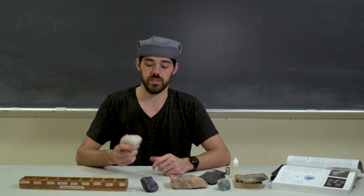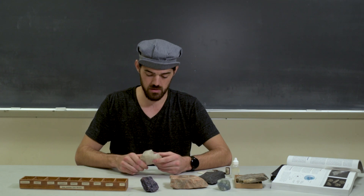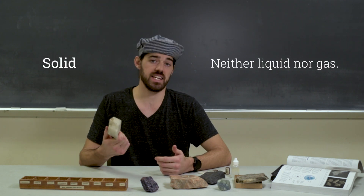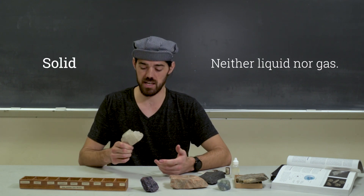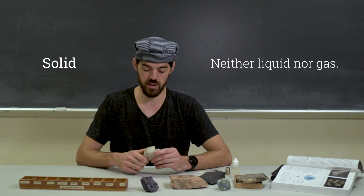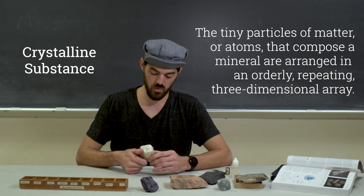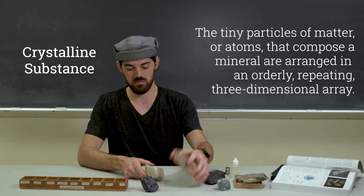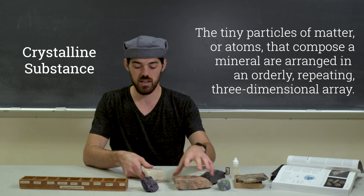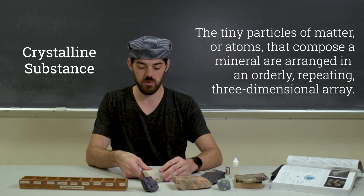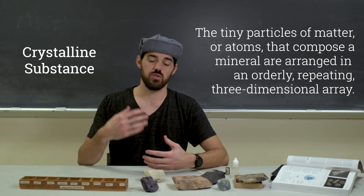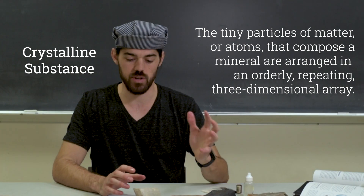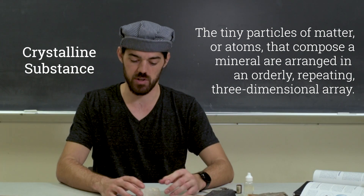Solid crystalline substance — solid simply just means not gas, not liquid. Crystalline substance really means each mineral, feldspar, calcite, whatever it is, has a predictable 3D atomic structure that is the same every time in that mineral.